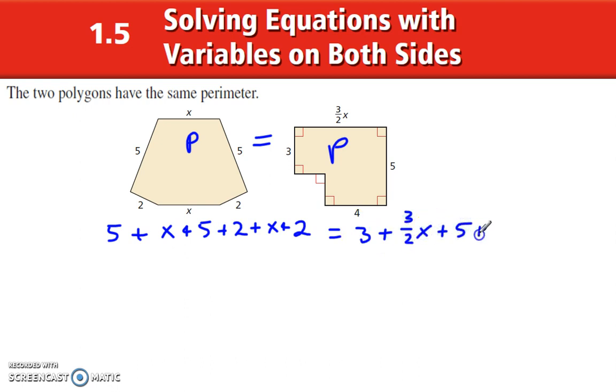That's the perimeter of this one going all the way around, and plus 5 plus 4. Now, is that all of it? Careful! Remember here I did the perimeter: 5, x, 5, 2, x, 2. Okay, I started here: 3, 3 and a half x, 5, 4. Have I gotten all the way around? What am I missing?